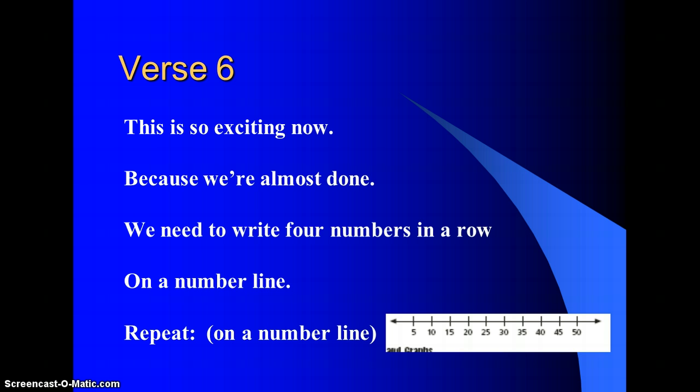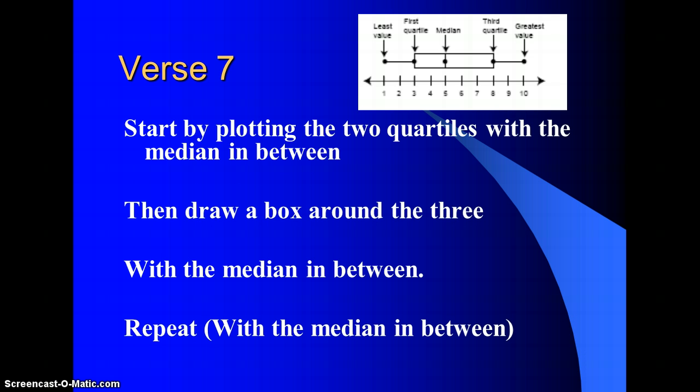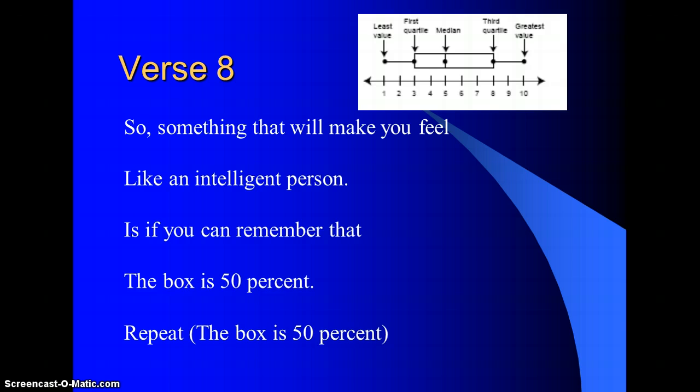This is so exciting. Now because we're almost done, we need to write four numbers in a row on a number line. On a number line. Start by plotting the two quartiles with a median in between. Then draw a box around the three with a median in between. With a median in between. So something that will make you feel like an intelligent person is if you can remember that the box is 50%. The box is 50%.